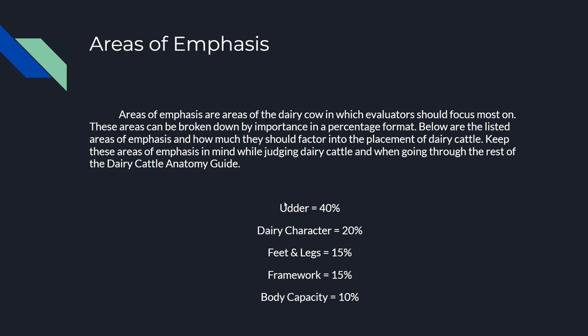The udder is listed at 40 percent — almost half of what you should be evaluating your dairy cows on. The udder is the most important anatomical part of a dairy cow. You might say a cow needs to walk and have normal bodily functions, and you're right. But at the end of the day, without an udder we won't produce milk. Bulls, for example, don't have a working udder and they don't produce milk. So udder is 40 percent.